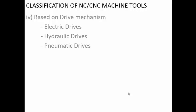Drive mechanisms can be electrical, hydraulic, or pneumatic. The more commonly used ones are electric and hydraulic drives for driving the spindle and axis movements. Pneumatic drives are not usually used for tool or workpiece movement because of low accuracy, but they are used for very fast movements such as tool changing and workpiece clamping.